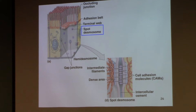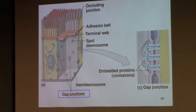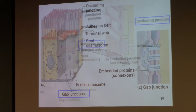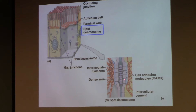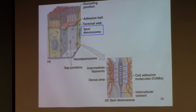Then there's the spot desmosome. The little purple dots are on the side walls, like gap junctions. When I zoom in, I notice it looks just like the adhesion belt, but the difference is it's not a belt — it doesn't go all the way along the length of the cell. It's just a spot, like a button, like a nail. Each cell contributes proteins — cell adhesion molecules, little purple nail-like things protruding into the neighboring space. Both cells interlock like fingers, but instead of being a belt-like structure going all the way around, it is just in one spot, in multiple spots.